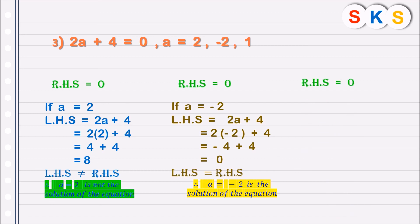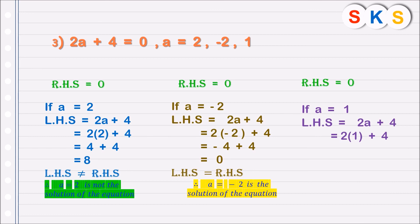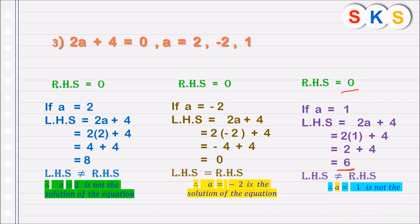For a equals to 1, we substitute into the left hand side, 2a plus 4. Replacing a by 1, we get 2 into 1 plus 4, which is 2 plus 4, that is 6. Since 6 is not equal to 0, LHS and RHS are not equal. Hence, a equals to 1 is not a solution of the given equation.